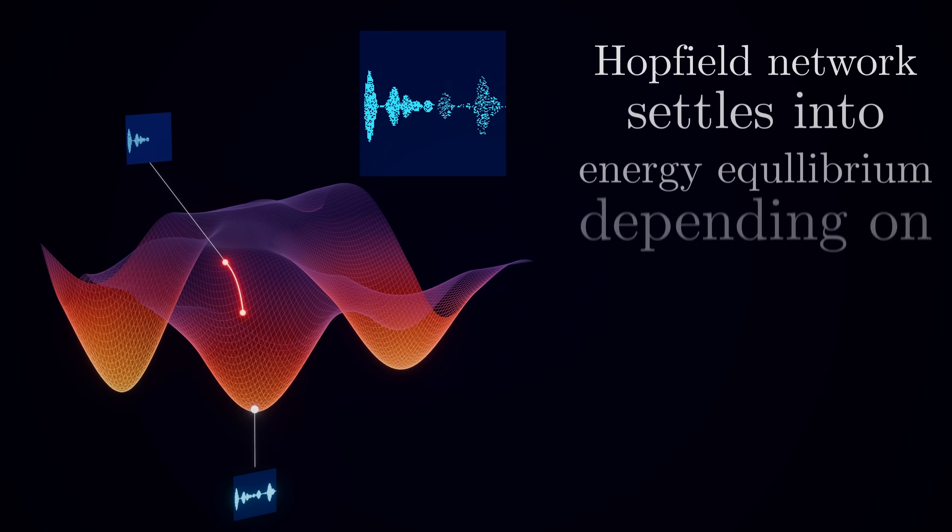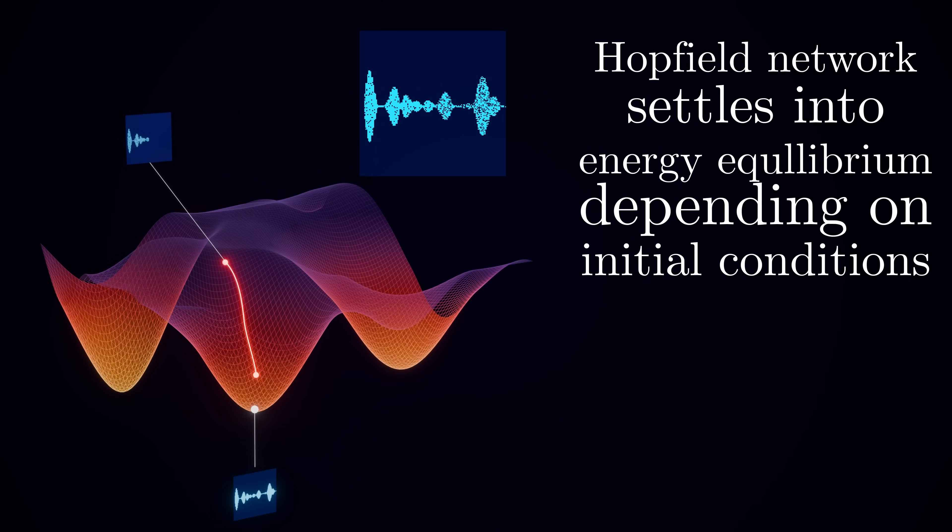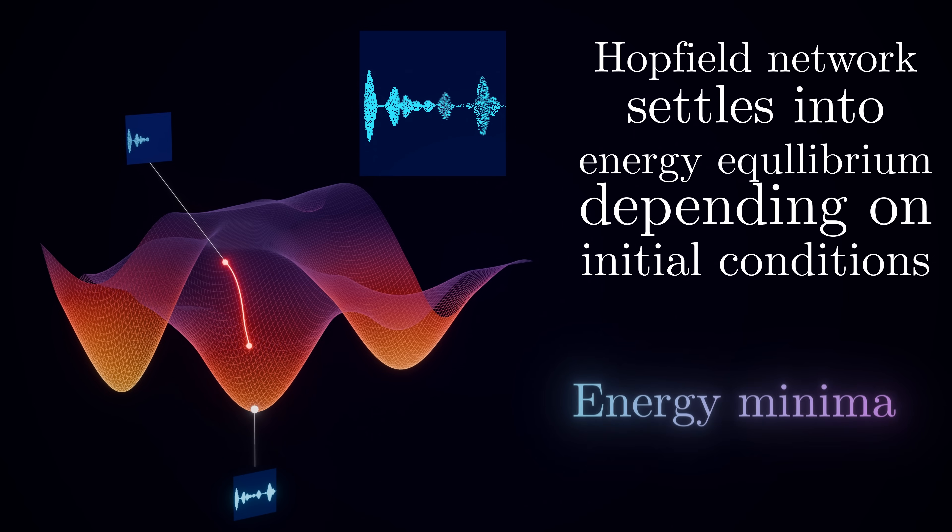To restate it, the Hopfield network can settle into different local minima based on its initial conditions. These local minima in the energy landscape correspond to distinct memories stored in the network. When we initialize the network with a pattern that is similar to one of these memories in some way and let it evolve, it will fall into the nearest local minimum, effectively recalling the complete stored memory, thus performing pattern completion or noise correction.